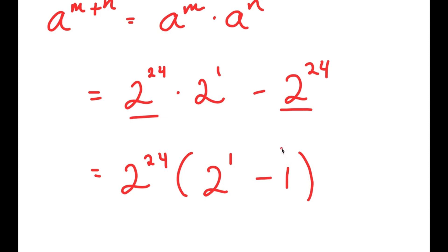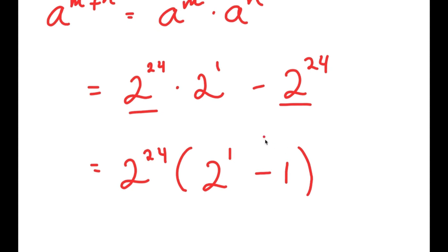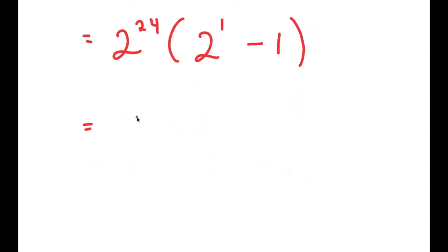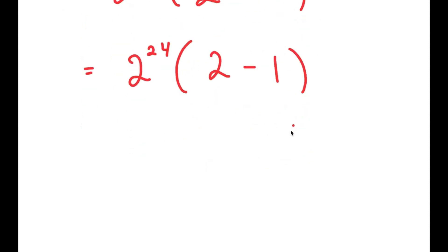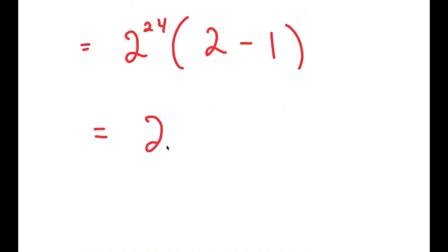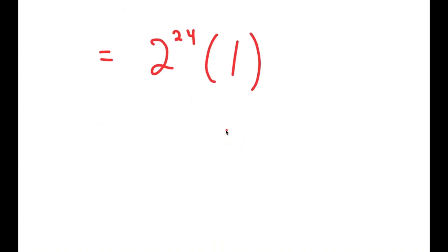So I get 2 to the power of 24 times 2 to the power of 1 minus 1, which is equal to 2 to the power of 24 times 2 minus 1, which is equal to 2 to the power of 24 times 1. And anything times 1 is obviously just equal to itself, so this is just equal to 2 to the power of 24.